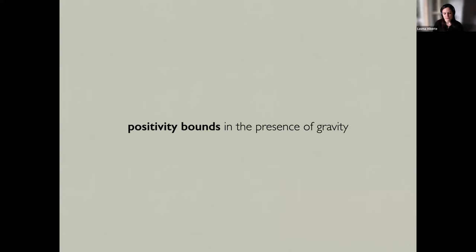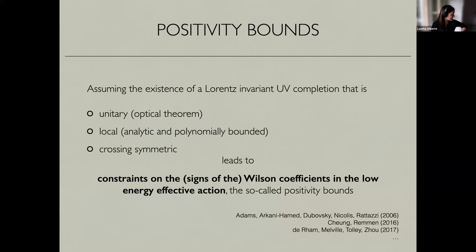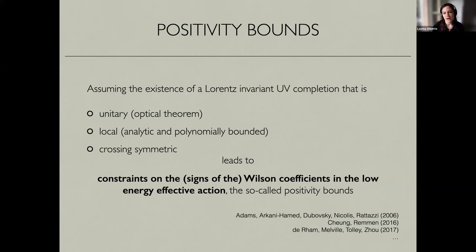Positivity bounds don't care whether we are constraining the IR modifications or UV modifications to gravity — that's the nice bit about them. So let me go through the positivity bounds in the most simple form, as clearly as possible. Positivity bounds are bounds on the effective field theory coefficients, by assuming the existence of a hypothetical UV completion of the theory that is Lorentz invariant, unitary, local, and crossing symmetric. These assumptions lead to constraints on the combinations of Wilson coefficients in the low energy effective action, which are the positivity bounds.